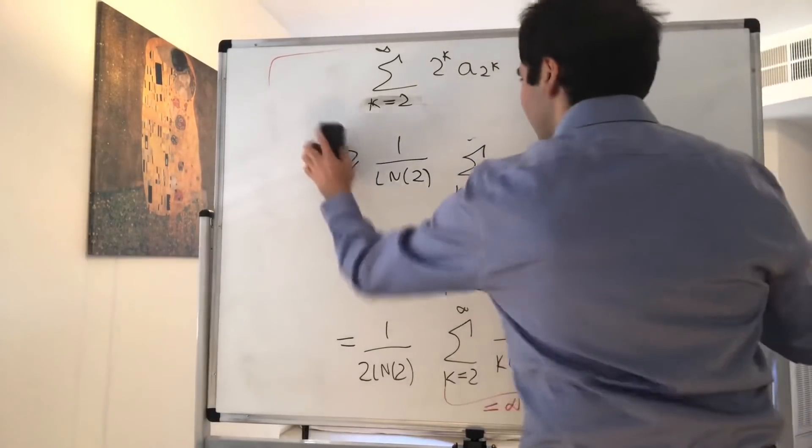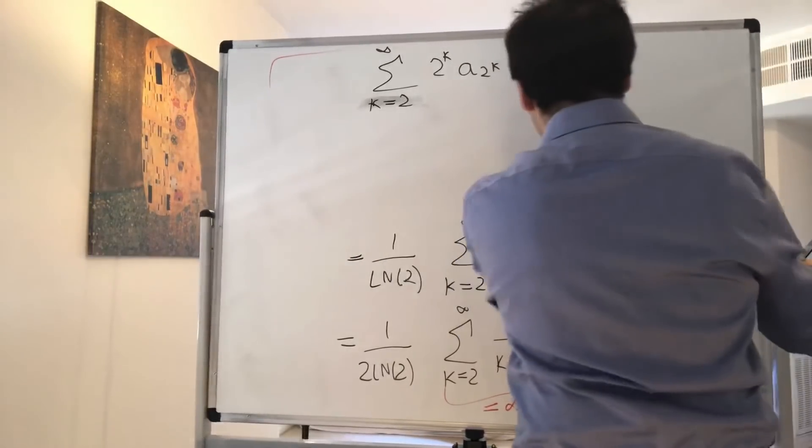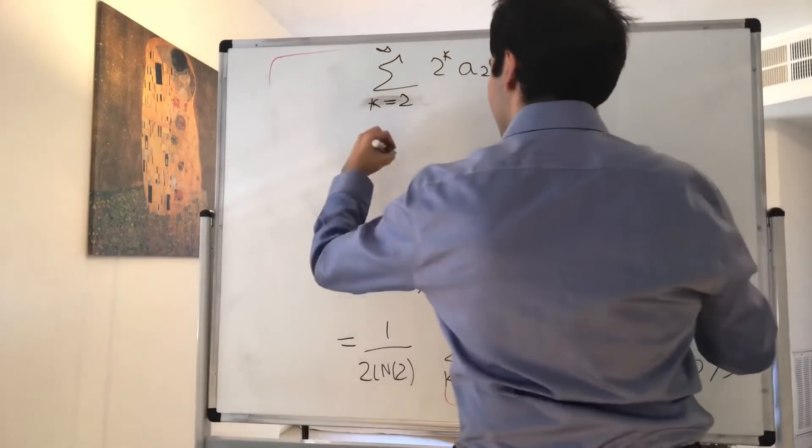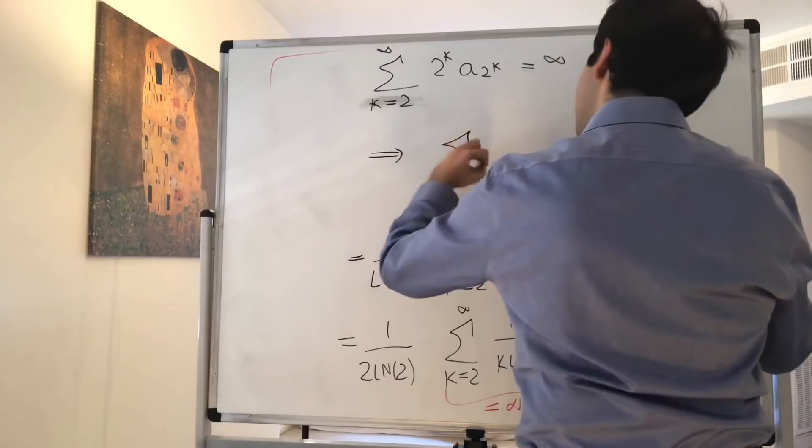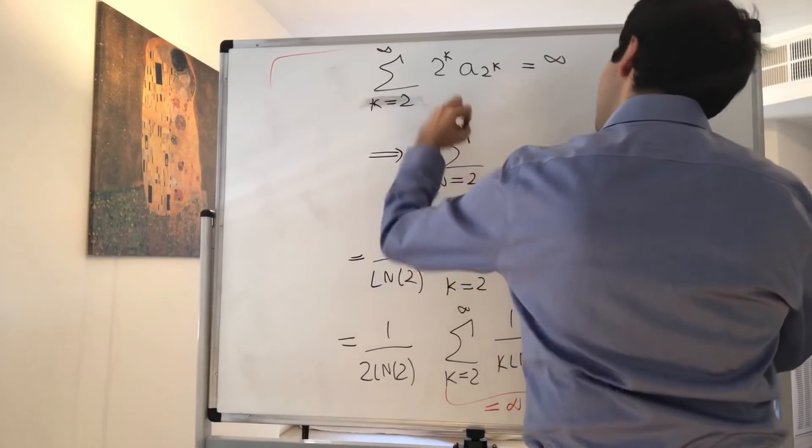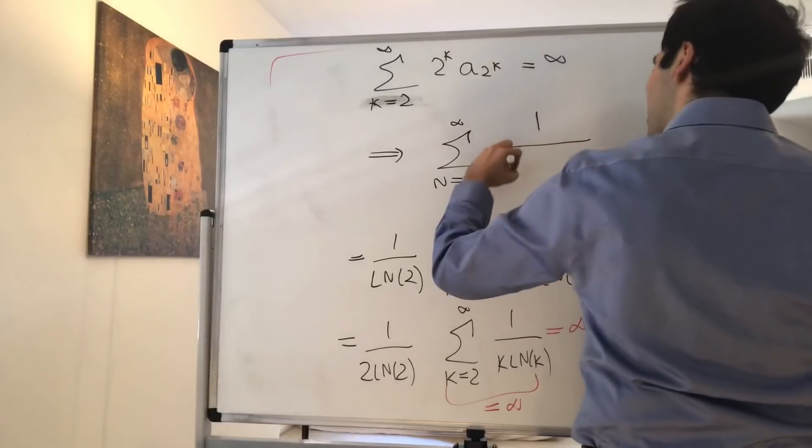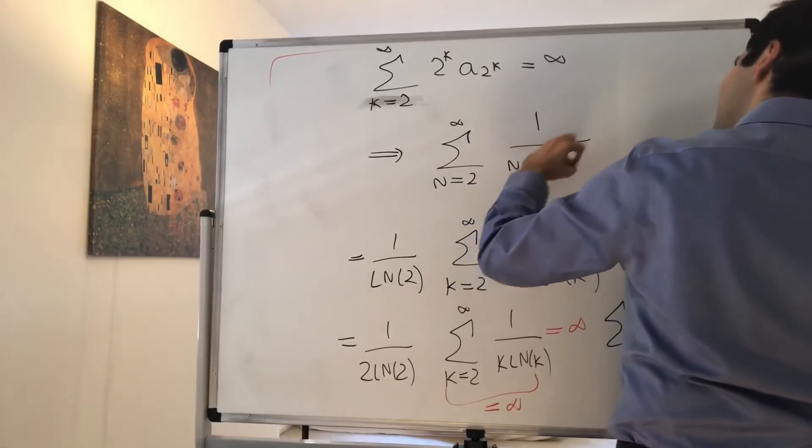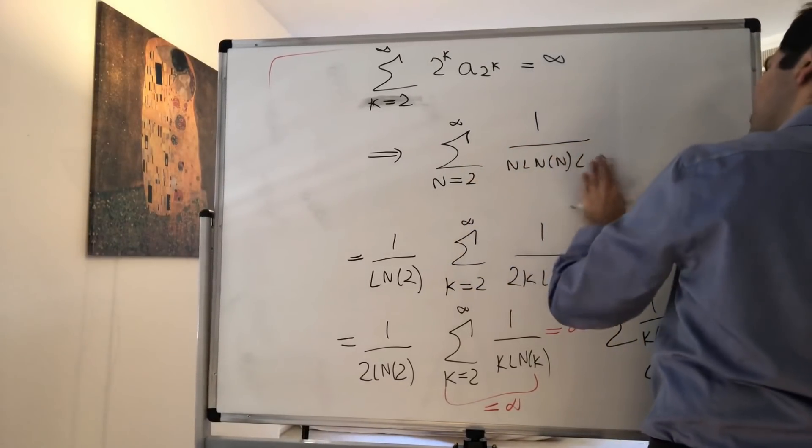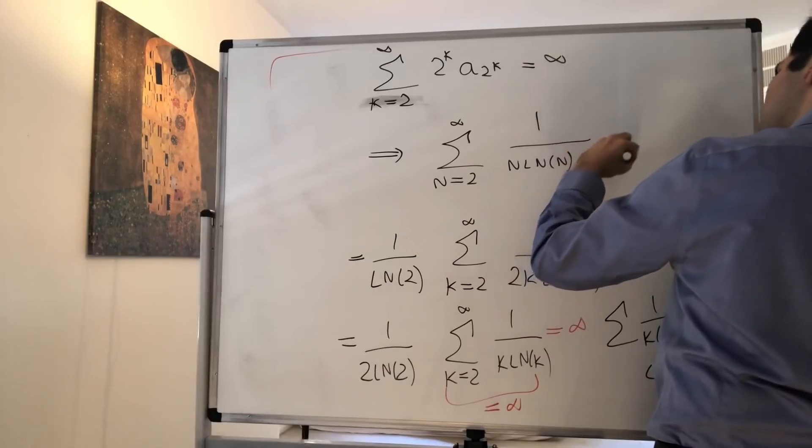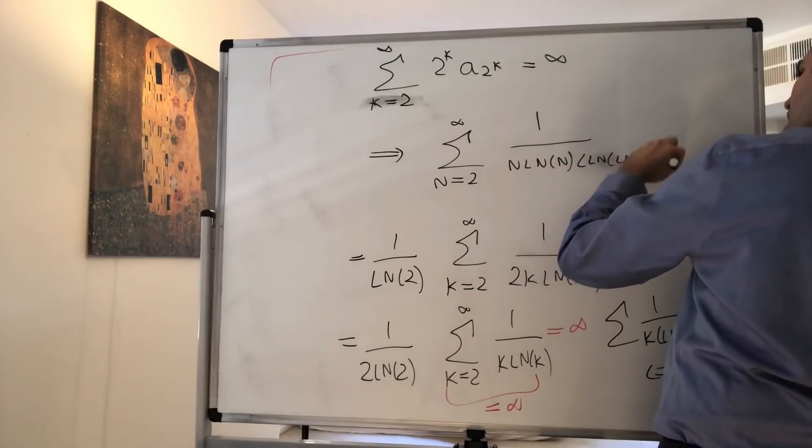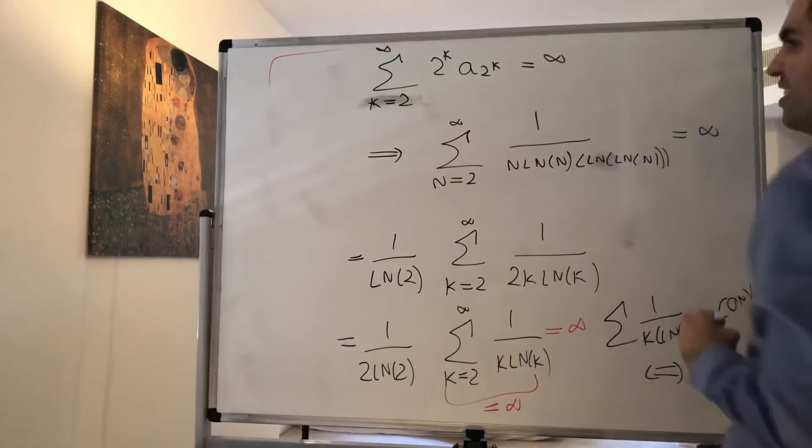Therefore, the original thing diverges as well. So therefore, the sum from n equals 2 to infinity of 1 over n ln of n ln of ln of n is infinity as well.